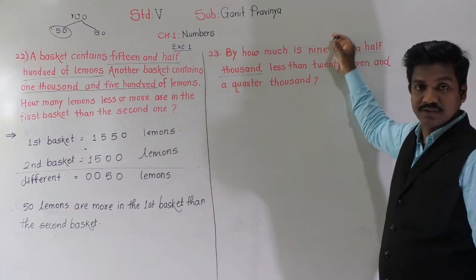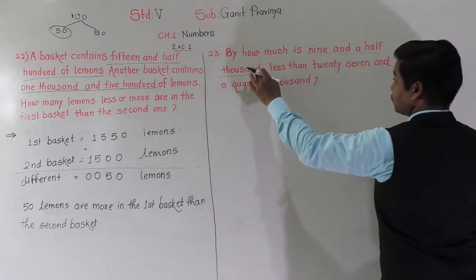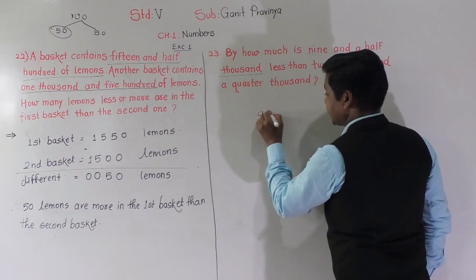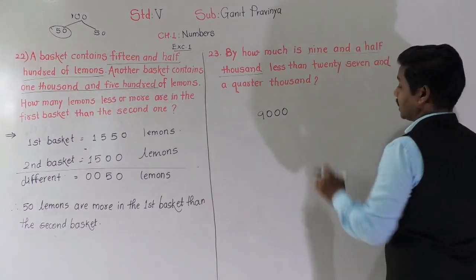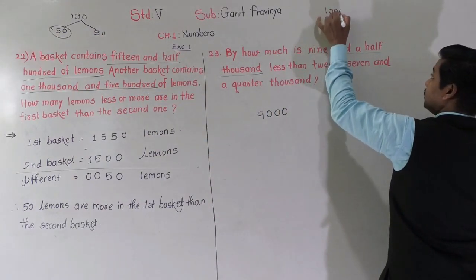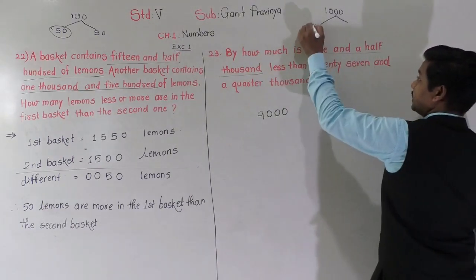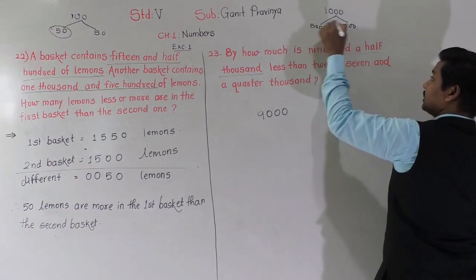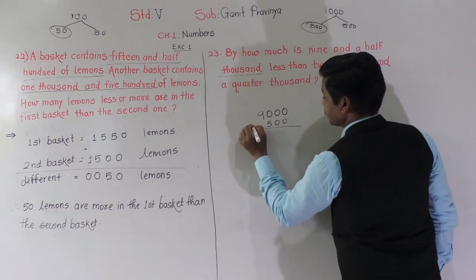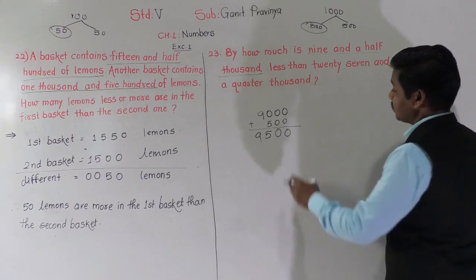9 and a half thousand means 9 complete thousands and half a thousand. Half thousand means half of 1000. If you divide 1000 into exactly two equal parts, in each part there will be 500. So half thousand means 500. Therefore 9 and a half thousand means 9000 plus 500, which equals 9500. So we got the first number: 9500.